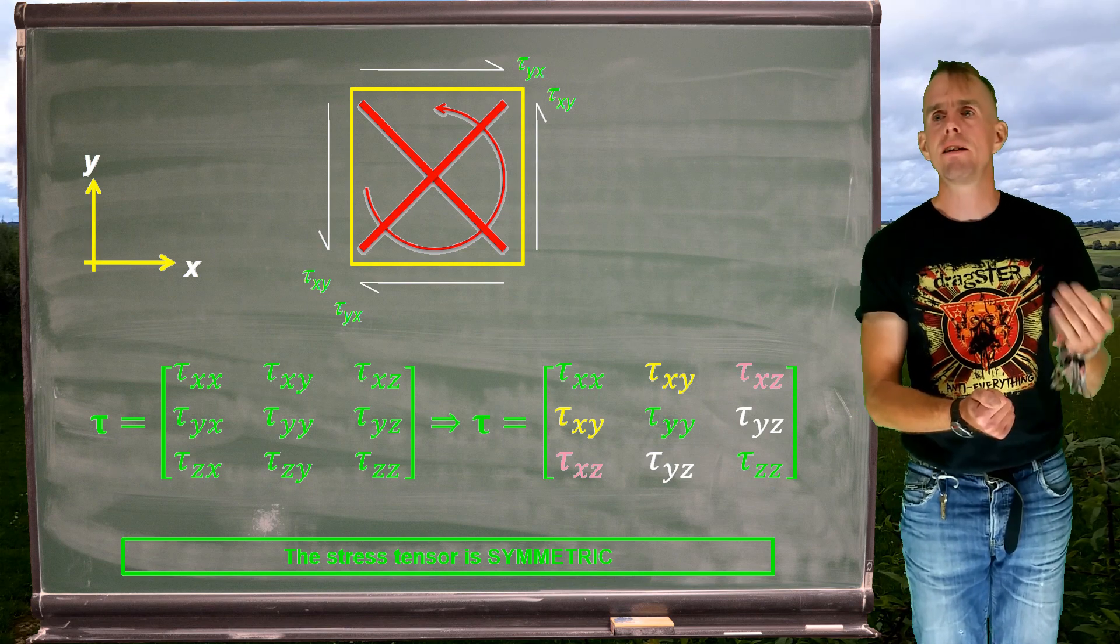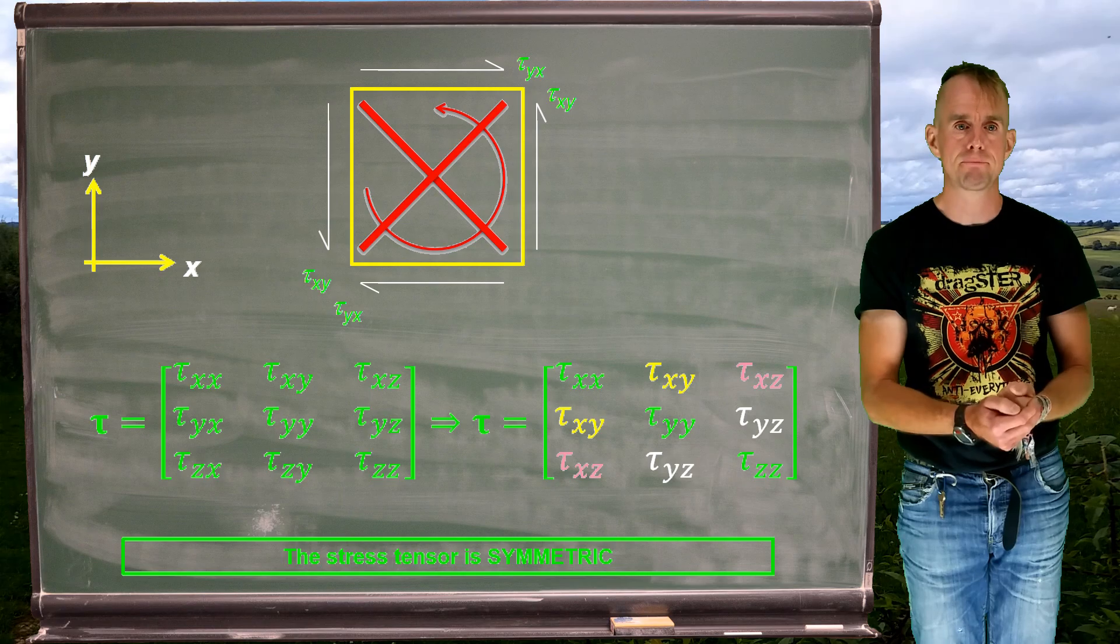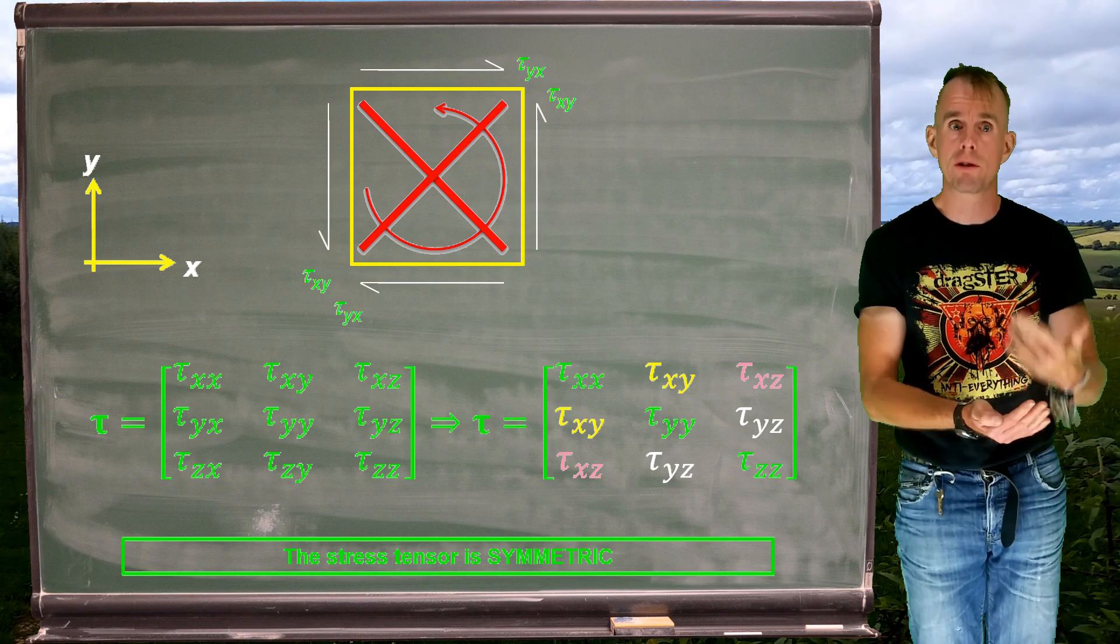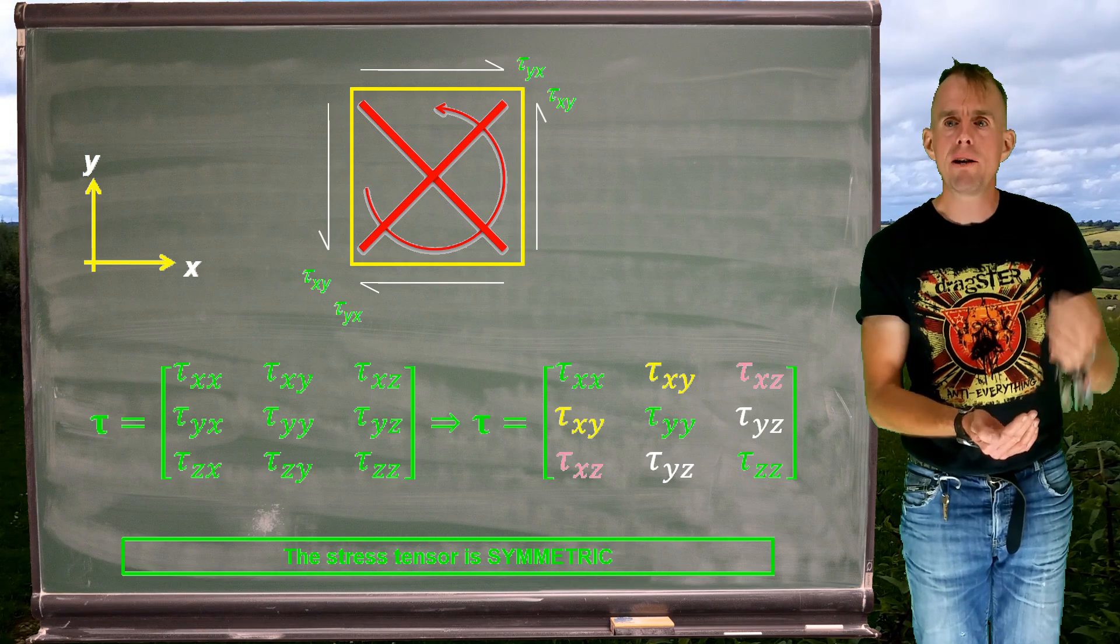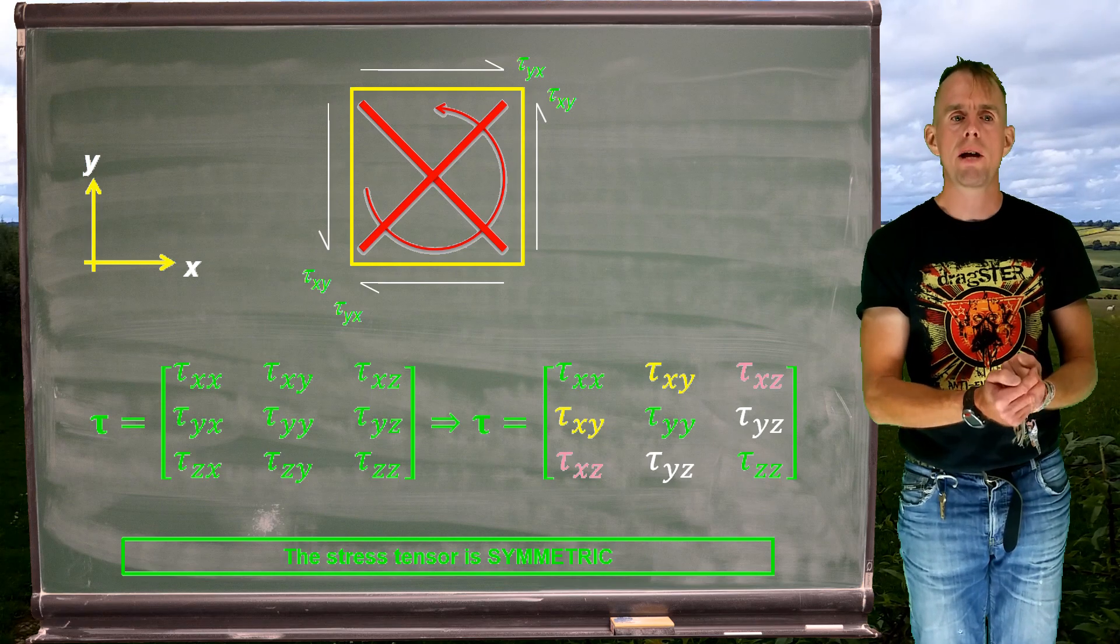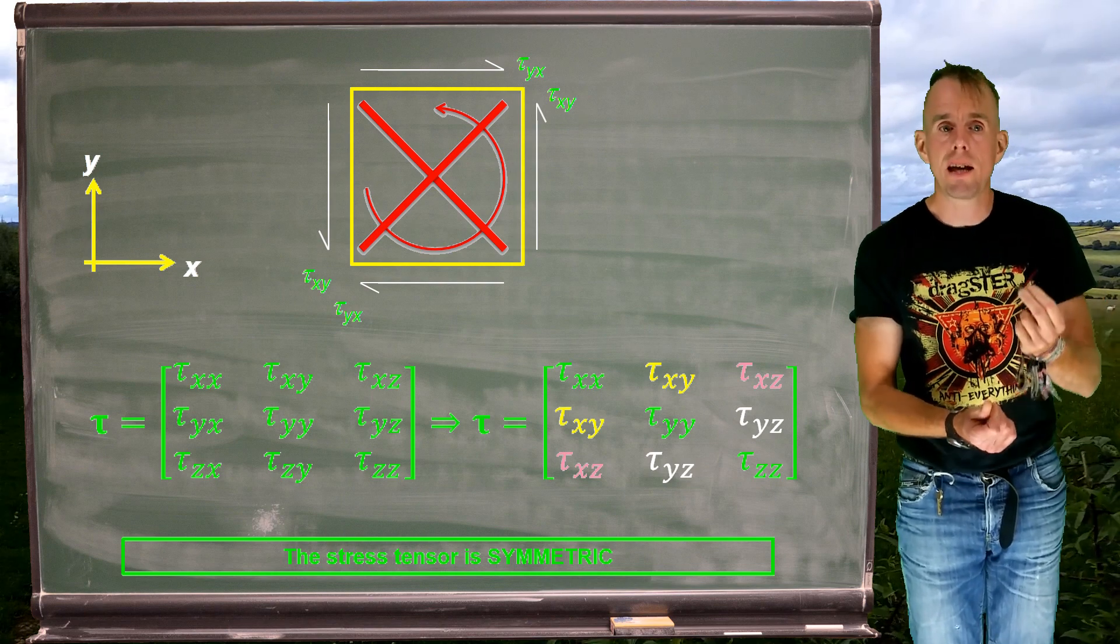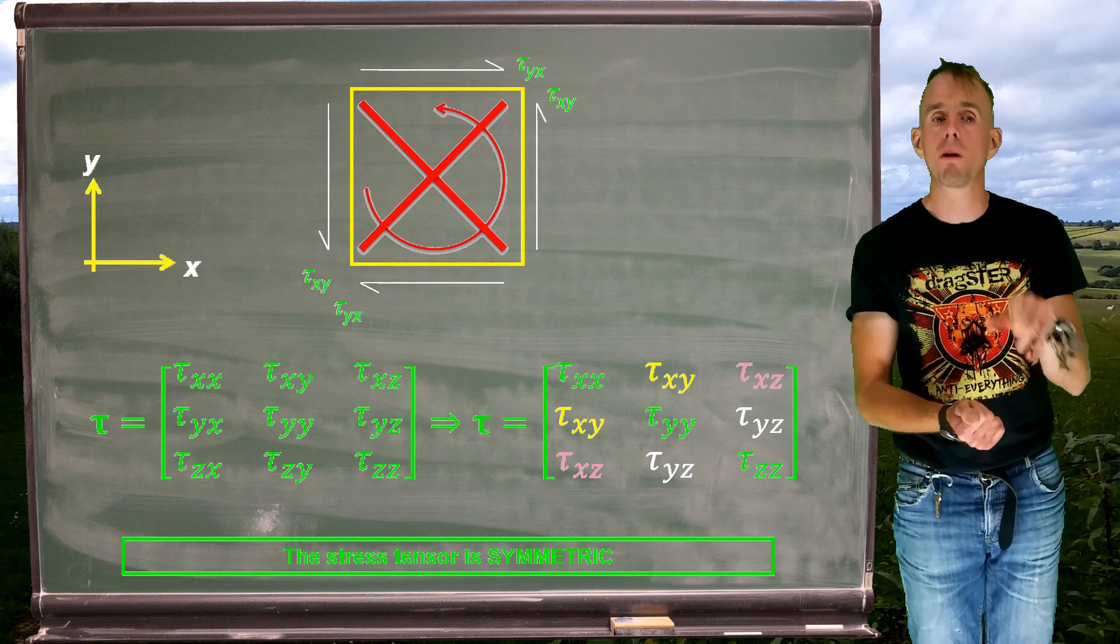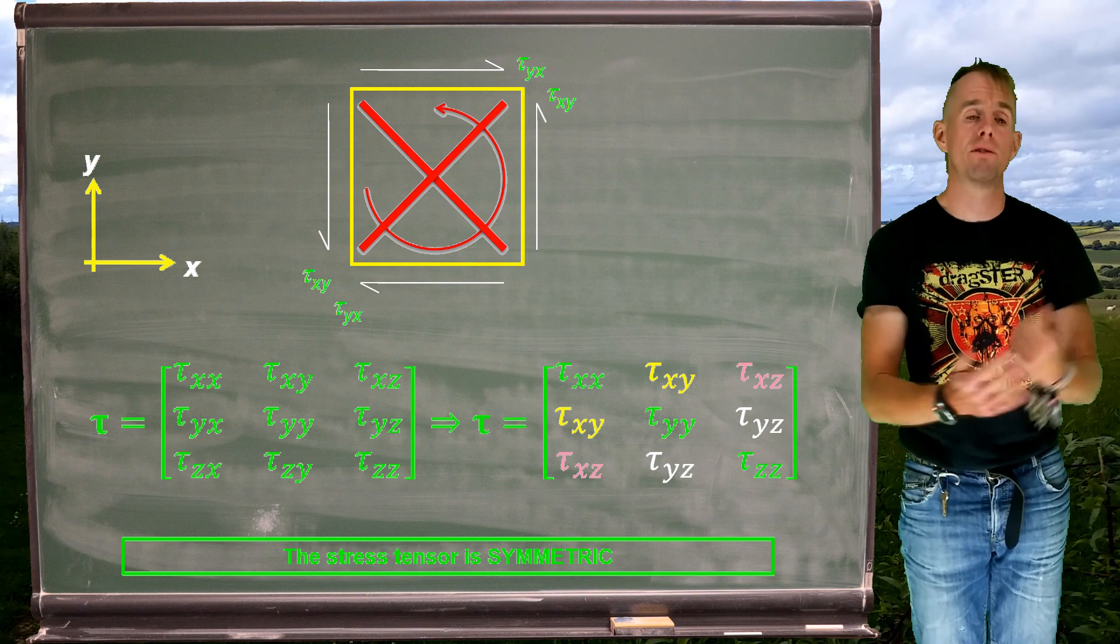Likewise, the xz and the zx shear stress will also have to balance. They're there in pink. The yz and the zy shear stresses also have to balance to avoid this rotation. And they're there in white. And so when we have equilibrium that doesn't involve rotation, we have a symmetric stress tensor with only six independent stresses, because we have the equality of those shear stresses either side of the principal diagonal, which is what gives us that symmetry.